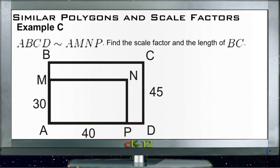Example C says ABCD, so that's our outside figure here. ABCD is similar to AMNP, so we have an outer rectangle similar to an inner rectangle. We need to find the scale factor and the length of BC. So we're looking for the length of this side up here.